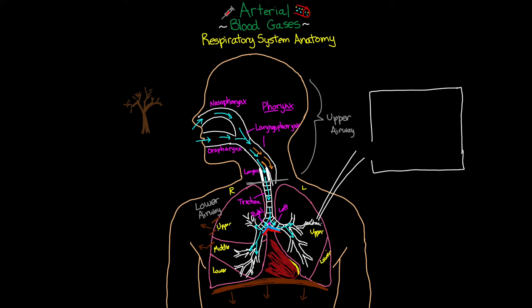Continuing through the generations of splits, we arrive at what we call the terminal bronchiole — one of the last sections of bronchiole. From there it splits into the respiratory bronchioles, and at this point we begin to see small pouches appear. These pouches are alveoli, coming together to form alveolar sacs. Inside our lungs there are somewhere between 300 and 500 million of these little alveoli — the final destination for the air we breathe in.